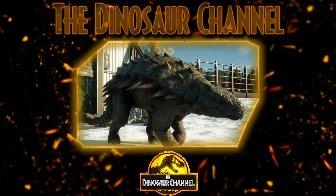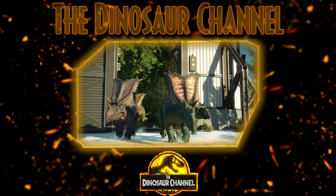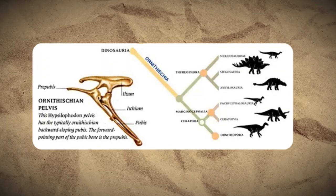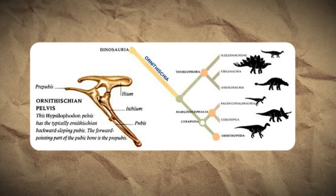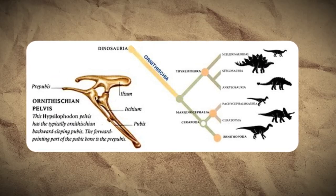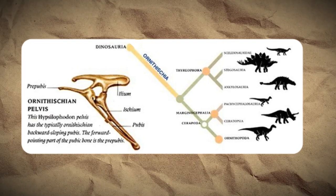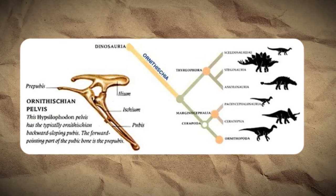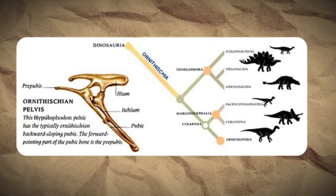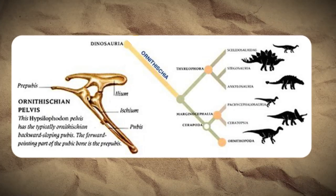There were many kinds of Ornithischian dinosaurs dating back to the early Jurassic. The group Ornithopoda includes hadrosaurs or duck-billed dinosaurs, Iguanodons, and Heterodontosaurus. Ceratopsia included horned dinosaurs like Triceratops. Thyreophora included armored dinosaurs like Ankylosaurus and Stegosaurus. And then there's Pachycephalosauria — the extremely thick-skulled pachycephalosaurs, some of my personal favorites.